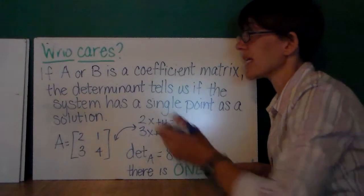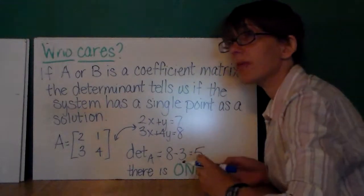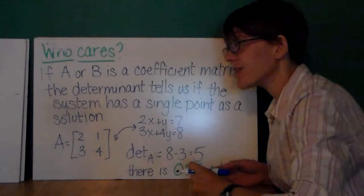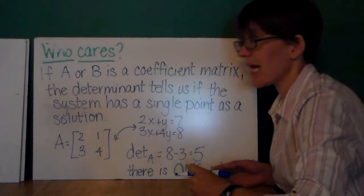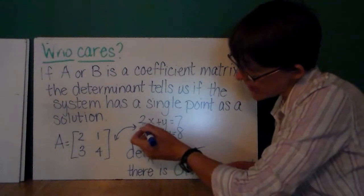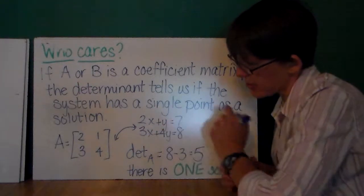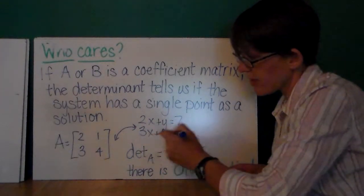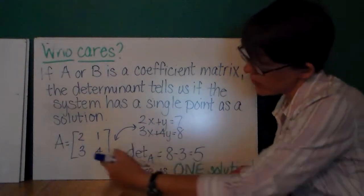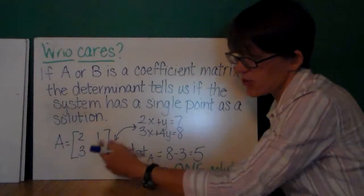Now, who cares? Well, if A or B is a coefficient matrix, the determinant tells us if the system has a single point as a solution. So, let's say that I have this: 2x plus y equals 7, 3x plus 4y equals 8. Well, here's my coefficient matrix. Hey, look, it's matrix A.